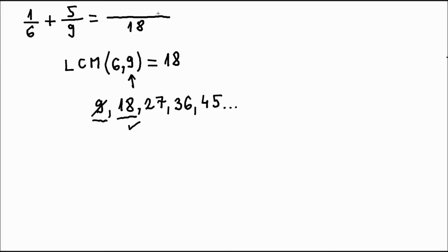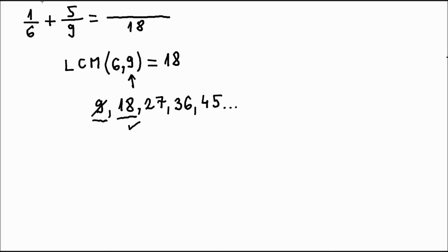Now, what numbers will be the numerators? How can we calculate them? Let's take a look at the first fraction. Let's compare the denominator six and the common denominator eighteen. With what do I need to multiply six to get eighteen? I'll have to use the same number to multiply one to get the right numerator. The answer is three. Then I'll also multiply one, the upper number, by three as well. One times three is three.